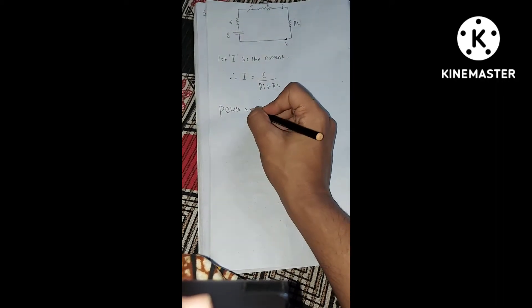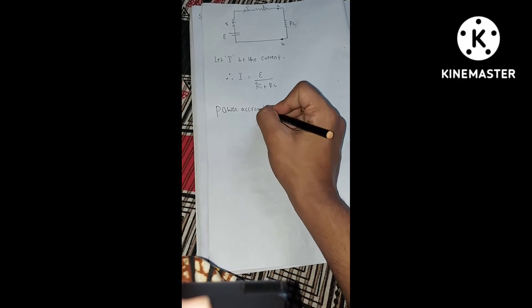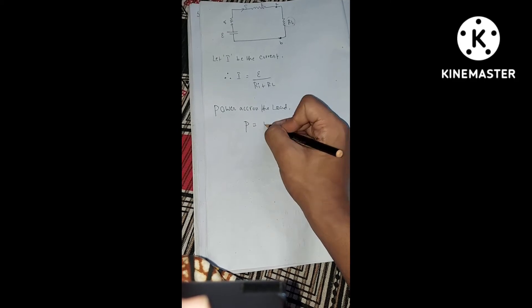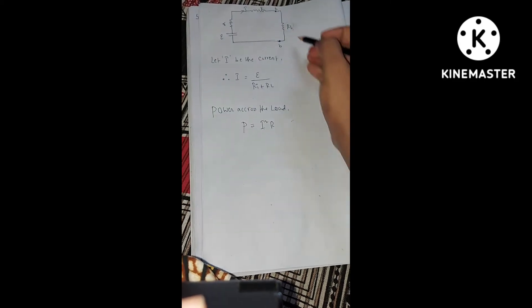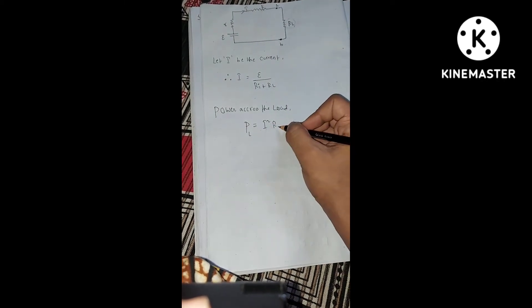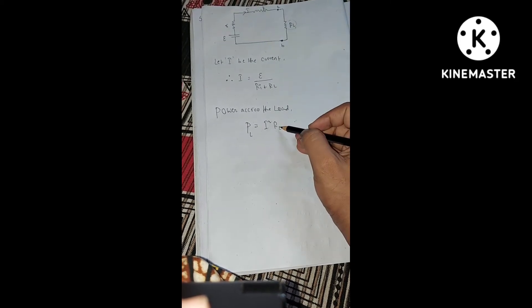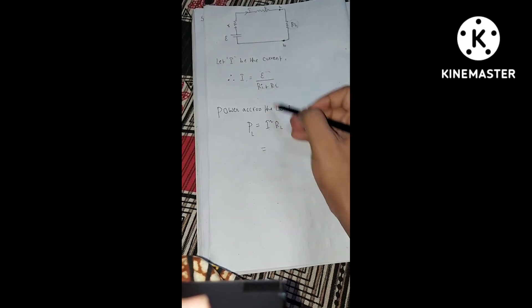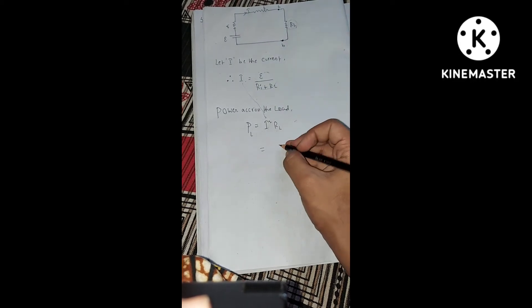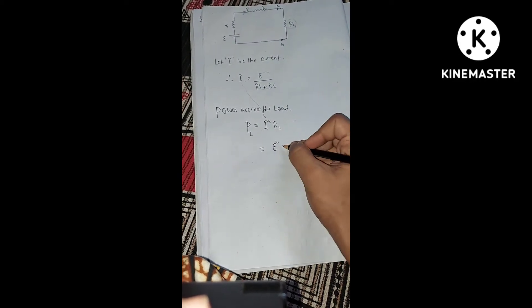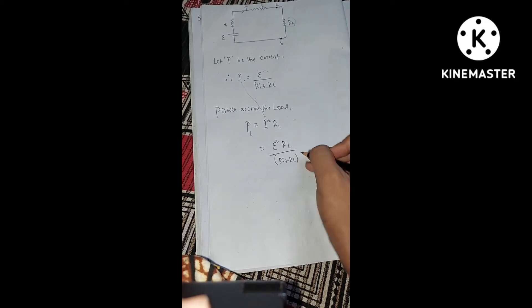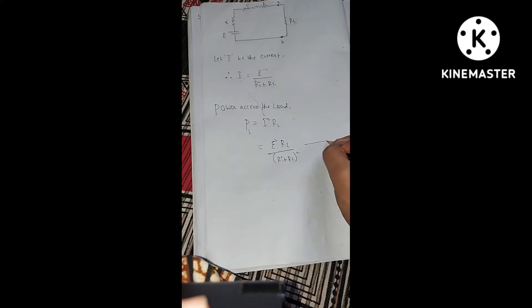Now, power across the load: we know that power is equal to I squared R. So power across the load PL is equal to I squared RL. We consider the load resistance to find the power across the load. Substituting the value of I, after solving you get: PL = E² RL / (RI + RL)². Take this as equation 1.